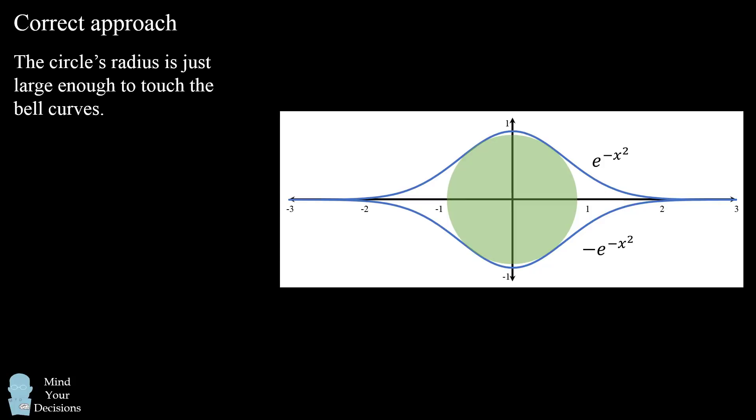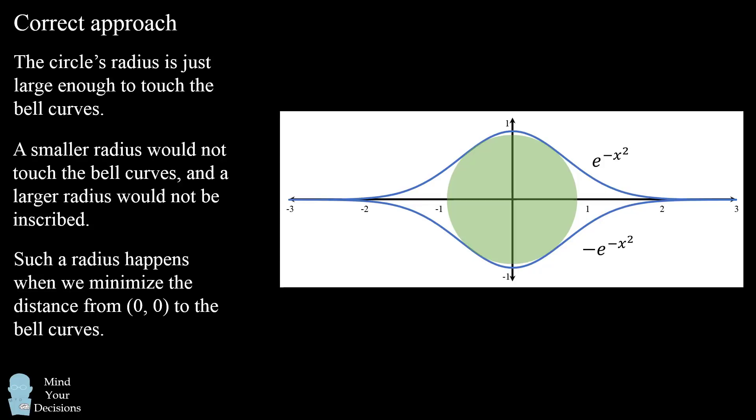At this point the circle's radius is just large enough to touch the bell curves. Any smaller radius would not touch the bell curves, and any larger radius would not be inscribed between the curves. This point happens when the radius is the minimal distance from the origin to the bell curves. At this minimal value, you can't have any smaller radius, and you also wouldn't want any larger radius, because then you would be touching the bell curves at more points, and it would not be wholly inscribed. So let's use this approach.